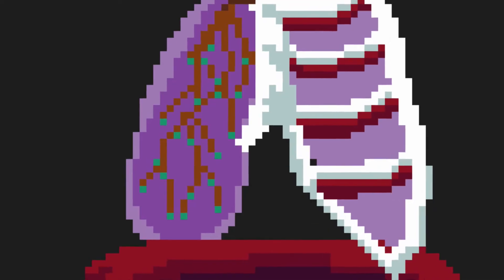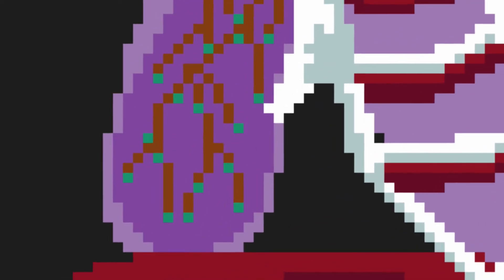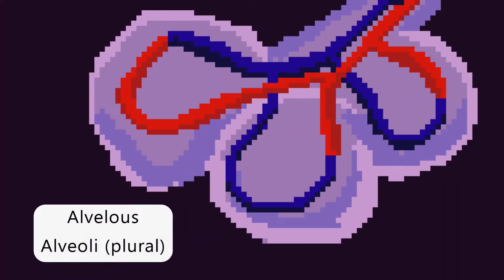At the end of the bronchioles are the alveoli. This is where gas exchange occurs between the blood and the alveoli.